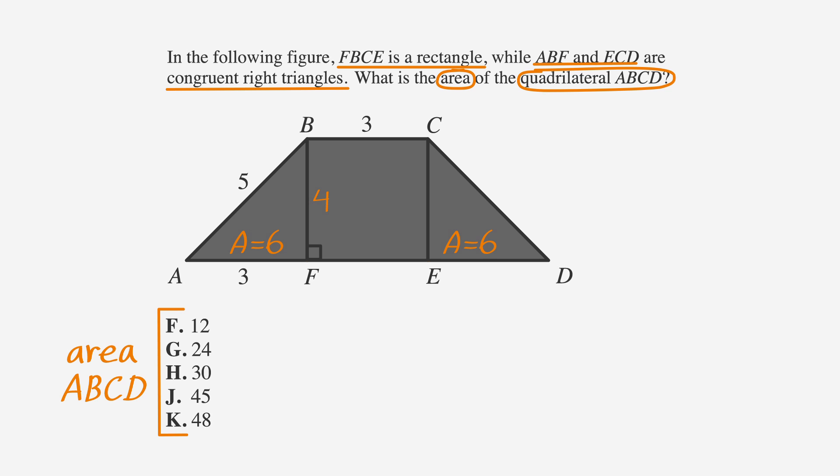Now we need to find the area of the rectangle in the middle. The formula for the area of a rectangle is length times width. The length is 3 and the width is 4. 3 times 4 equals 12. So the total area of the shape ABCD equals 6 plus 12 plus 6, or 24, which is answer choice G.